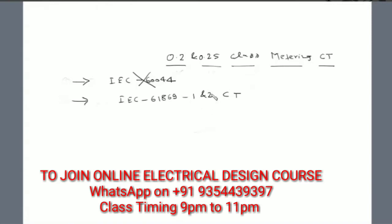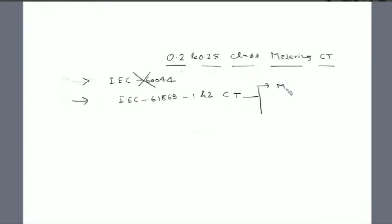For the current transformer, as we know, there are two types we use: one is the metering CT used for metering purpose, and the second is the protection CT. Now this metering CT has different accuracy classes.